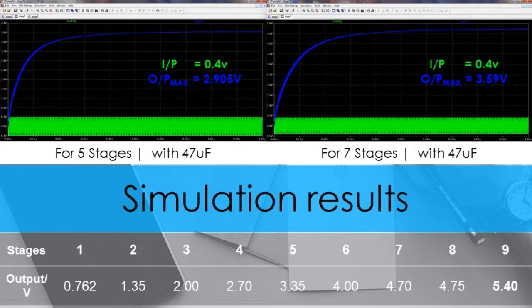There are a couple of different values that can be used for the capacitance. We simulated the circuit with the following stage capacitances. We observed 2.905 volt for 5 stages and 3.59 volt for 7 stages.